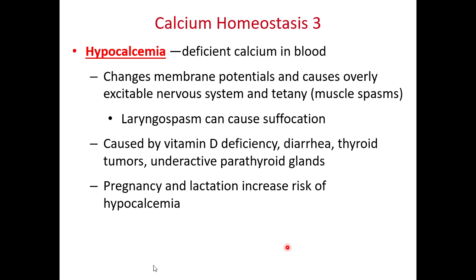If someone does not have enough calcium in their bloodstream, that is hypocalcemia — hypo referring to below normal level. Without enough calcium, the membrane voltage across cell membranes becomes altered; the nervous and muscle membranes become elevated in voltage, making them overly excitable. This causes excessive muscle spasms. Occasionally someone will have a laryngospasm — an uncontrollable contraction of muscles associated with the larynx — which could potentially cause suffocation if unchecked.